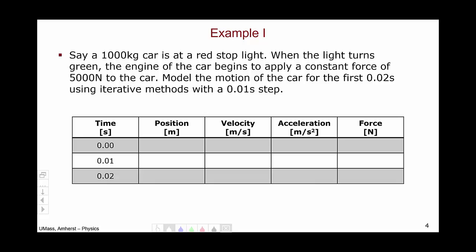We begin by constructing our table, where we have the usual columns of time, position, velocity, and acceleration. We've now added a new column, force, with the units newtons. And we have our times 0, 0.01, because we're working in a 0.01 second step, and then 0.02 seconds, which is as far as we care to go for this particular problem.